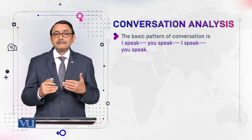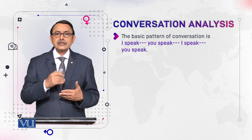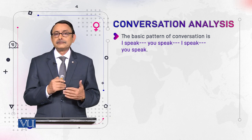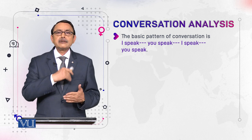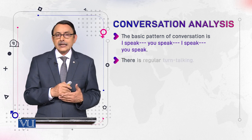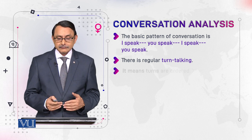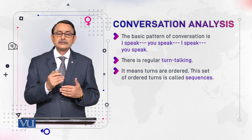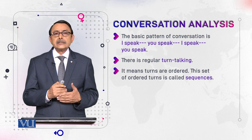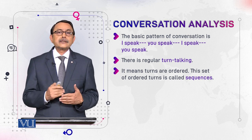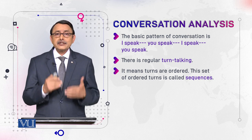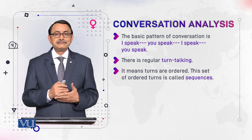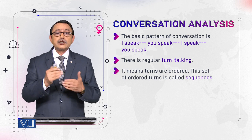I speak, you speak. There is one speaker, the other is listener, and you speak, and I listen. The listener becomes speaker and speaker becomes listener. So this also shows turn-taking. It means turns are ordered. This set of ordered turns is called sequences. The literal meaning of sequences is also order. So turns are in a particular order, and these ordered utterances are called sequences.